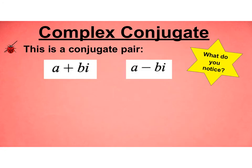This is a complex conjugate, and this is called the conjugate pair. So what do you notice? I can see that the imaginary part is positive here, but negative here, and that's going to be important. So you change the sign of the imaginary part, and then you will have a conjugate pair.